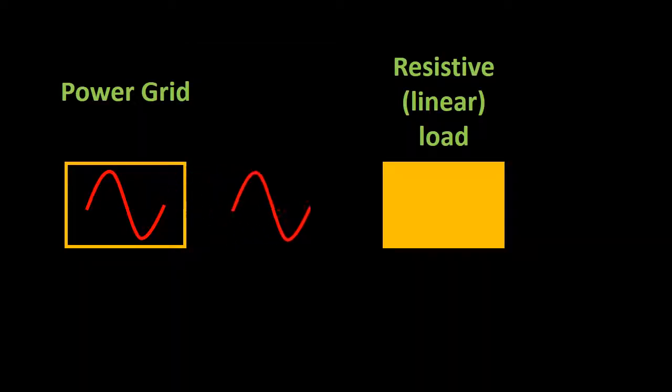In this diagram, we see a resistive load getting fed by the grid. All of the power delivered to the load is consumed.